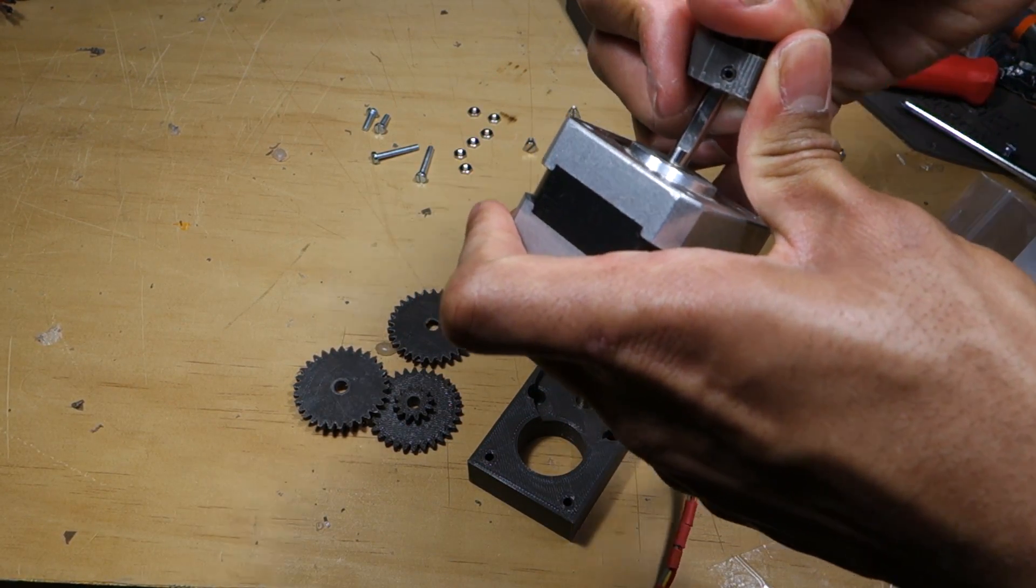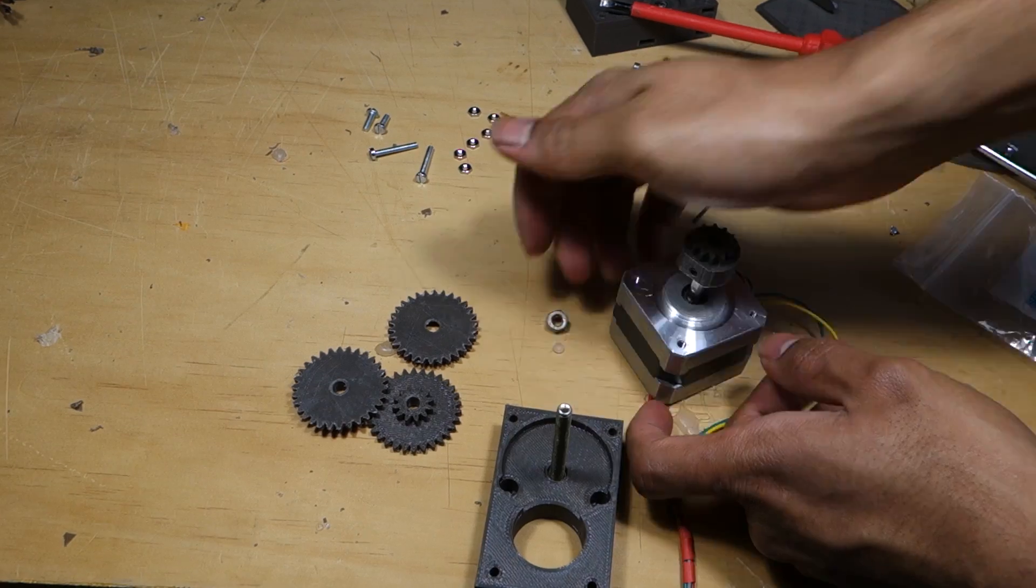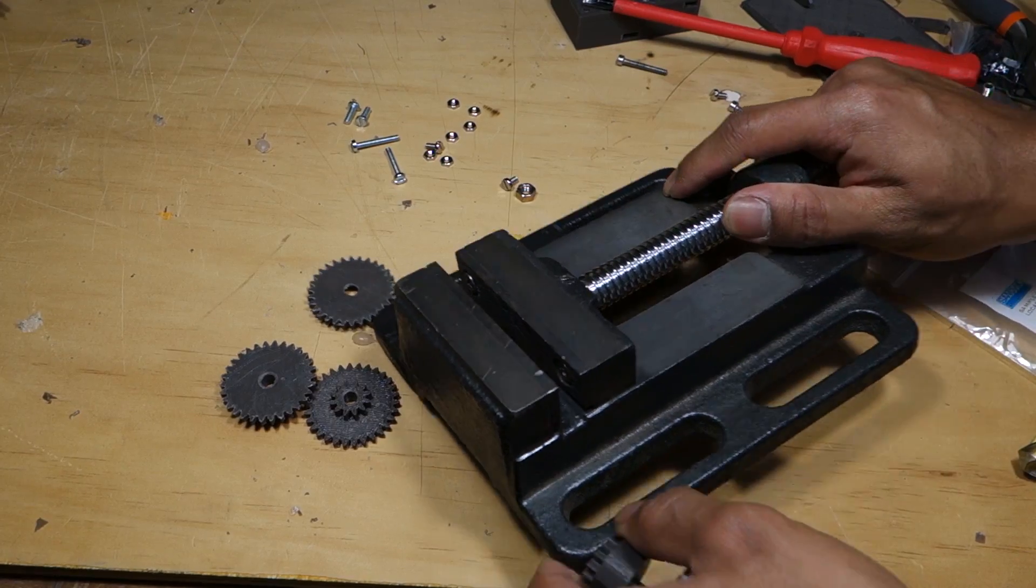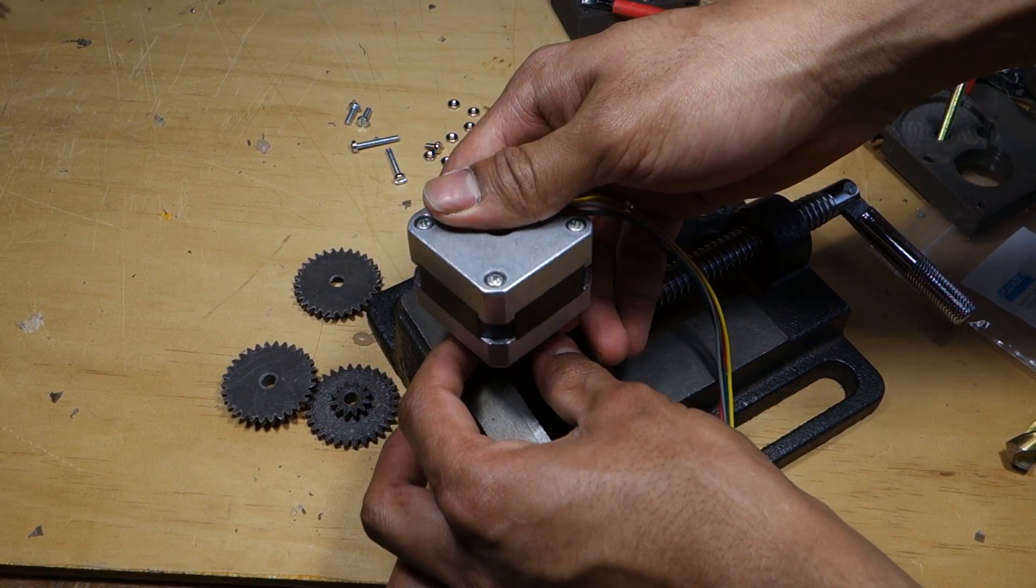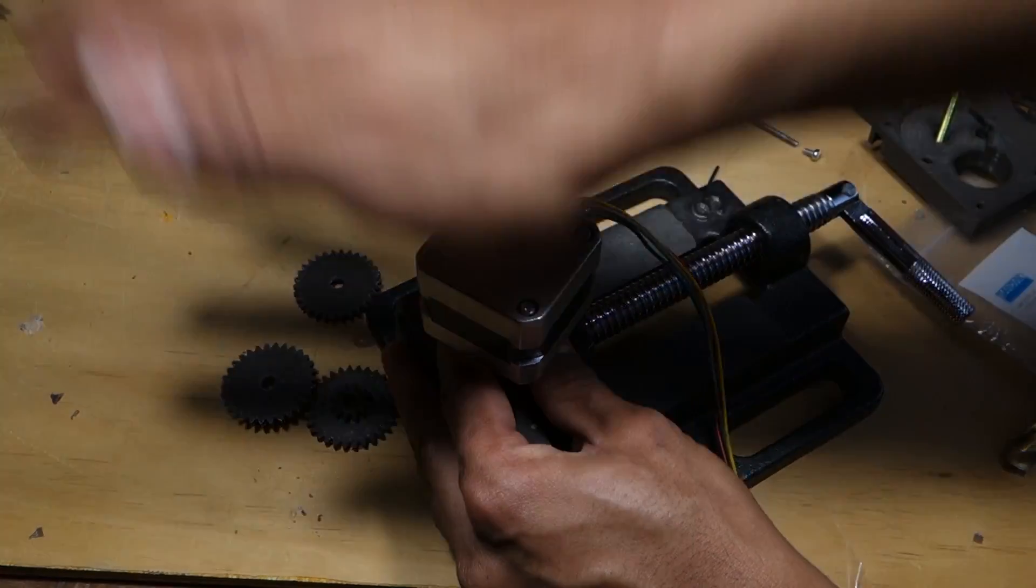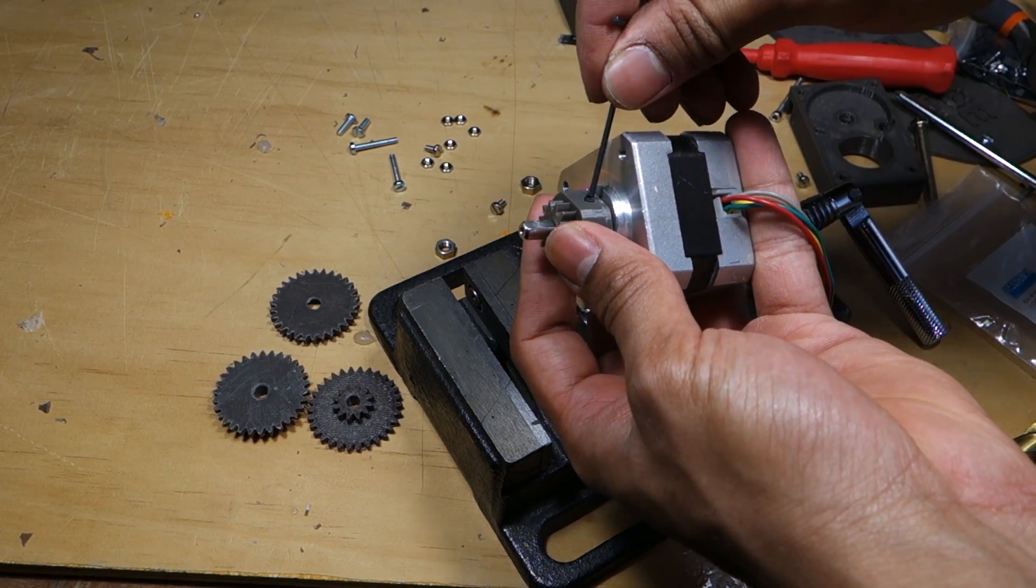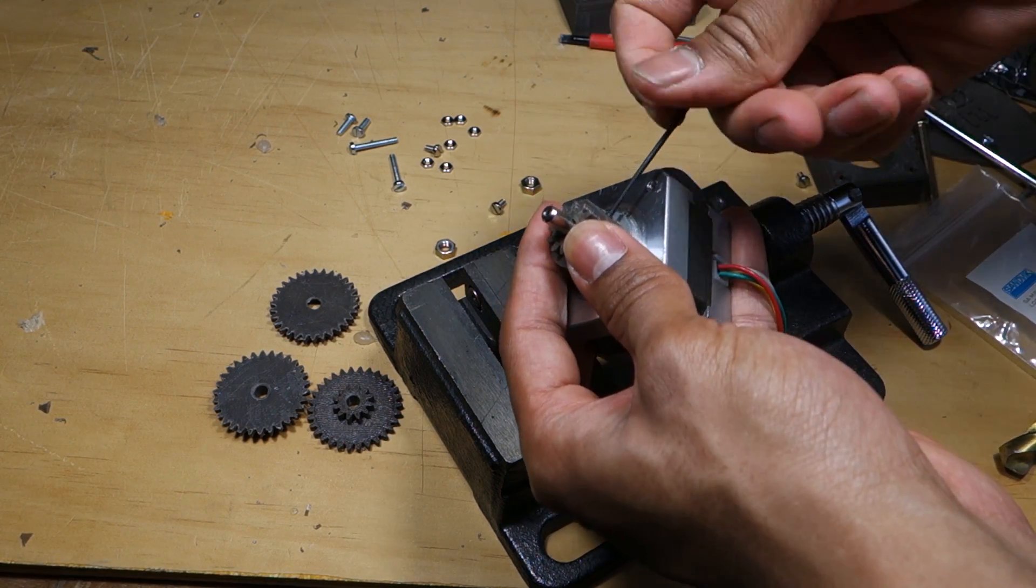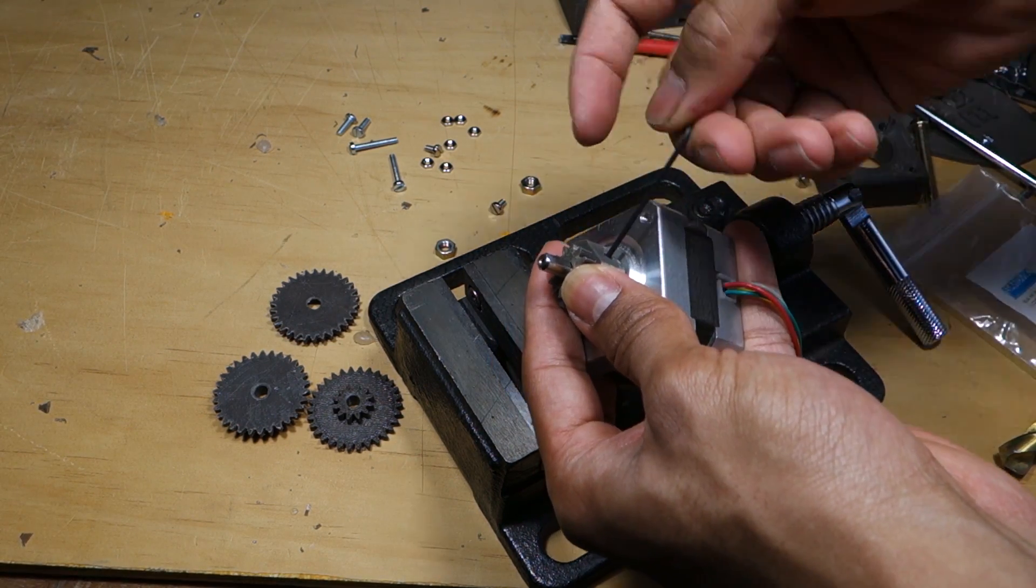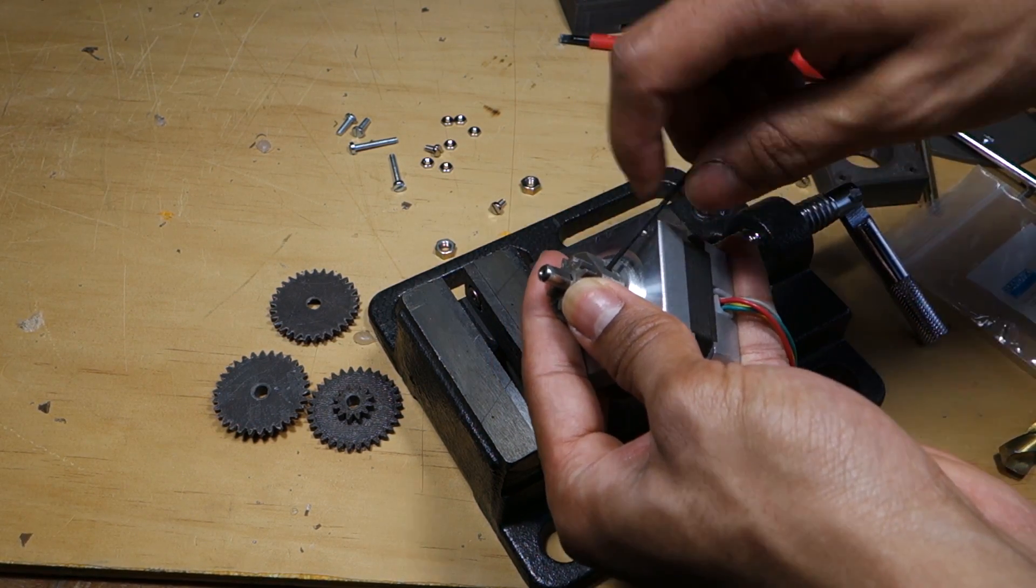Slide the pinion all the way down the shaft of the stepper motor. Then tighten the grub screw down. Make sure the grub screw is aligned with the flat on the motor shaft if yours has one.